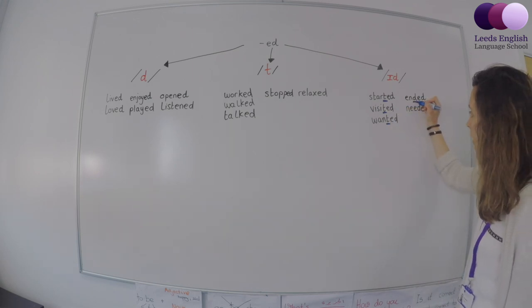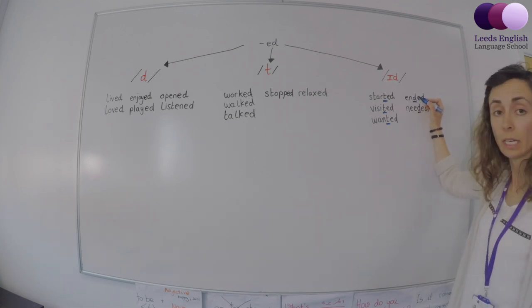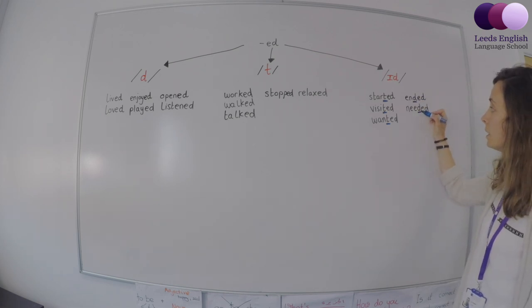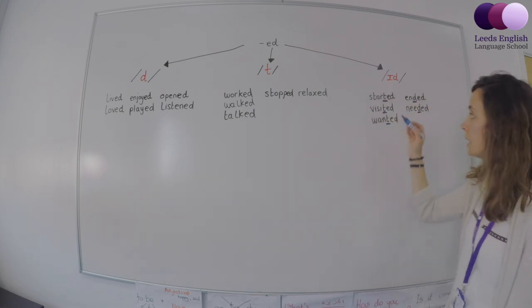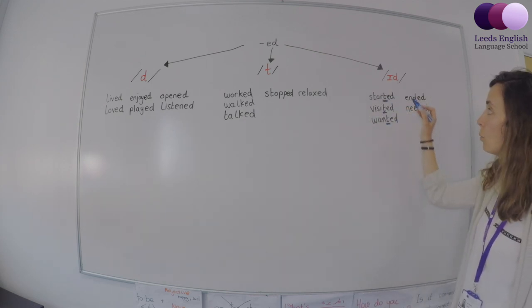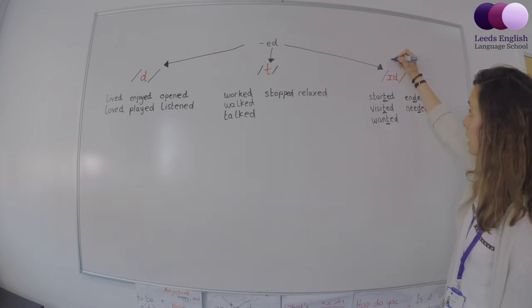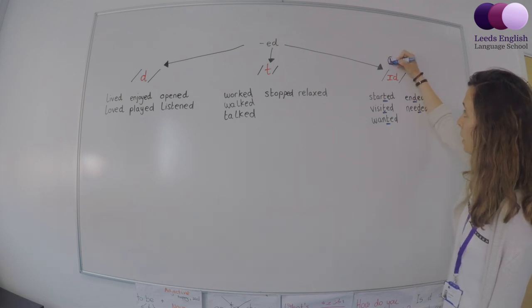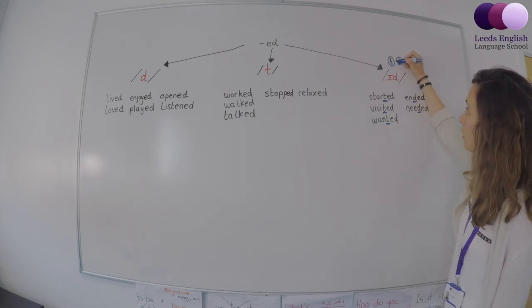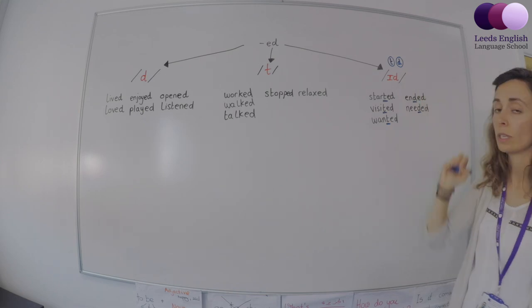And what about here? With a D. Ended. Needed. So if the last sound is a T or a D, we use I D as the pronunciation. So I'll put those up here to remember. The last letter is T and D, we use I D.